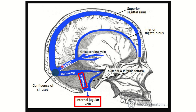The straight sinus comes to the confluence of sinuses. From the confluence we can see the transverse sinus. From the transverse sinus, blood flows into the sigmoid sinus, and the sigmoid sinus drains into the internal jugular vein. This is the normal pathway of venous sinus flow.